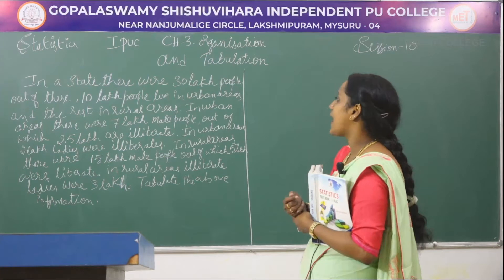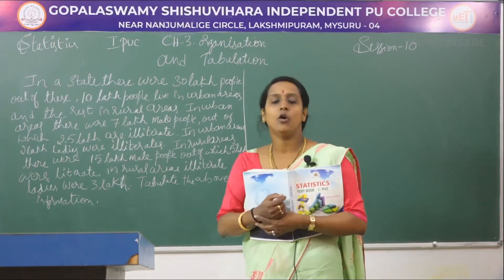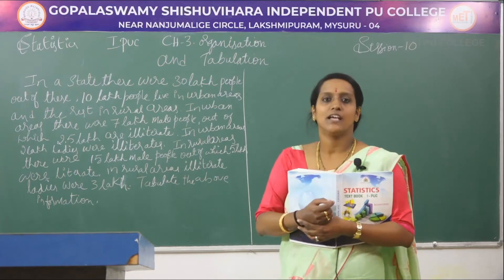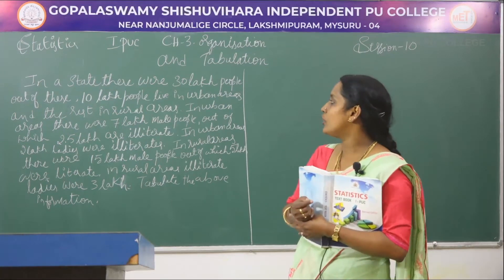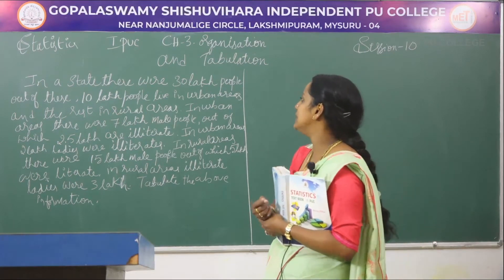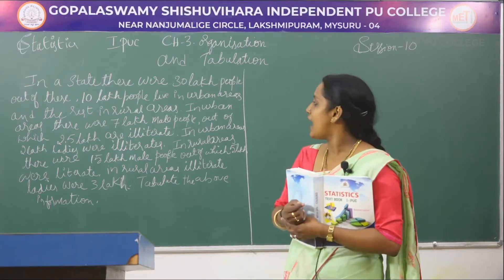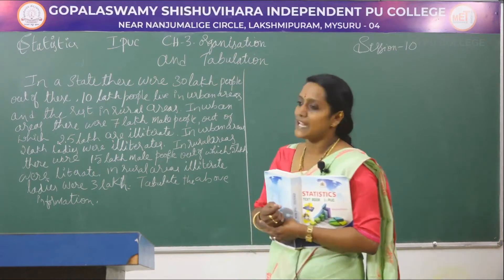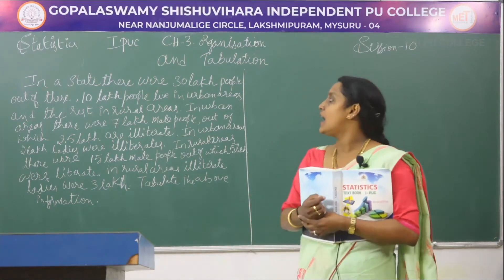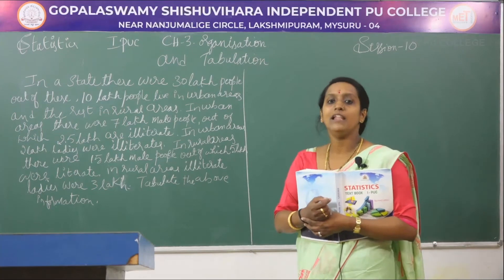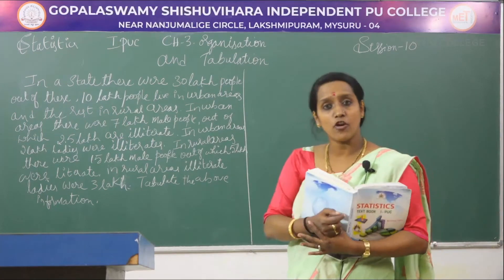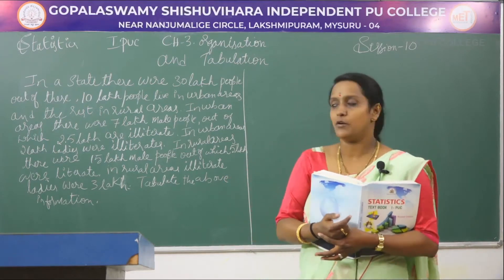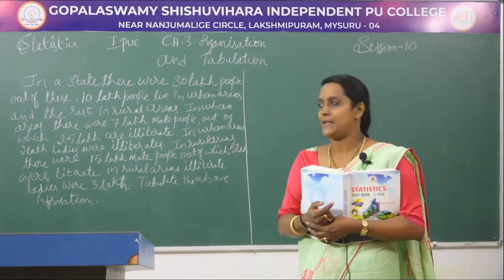In a state there were 30 lakh people. The overall population in that particular state is 30 lakhs. Out of this, 10 lakhs people live in urban areas and the rest in rural areas. So our area of living will be two categories: one is urban and one is rural, with the total populations.